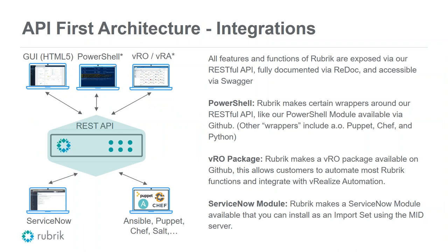Super easy to integrate: if you go to github.com/rubrikinc, you'll see pre-built integrations for PowerShell, vRealize, ServiceNow, Splunk modules, Chef, Puppet, Ansible — all open sourced. We truly encourage partners and anyone who wishes to get involved in building out a community around those integrations. Also check out build.rubrik.com for more information.